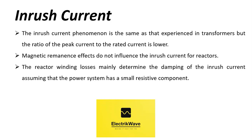The inrush current phenomenon is the same as that experienced in transformers, but the ratio of the peak current to the rated current is lower. Magnetic remanence effects do not influence the inrush current for reactors. The reactor winding losses mainly determine the damping of the inrush current, assuming that the power system has a small resistive component.